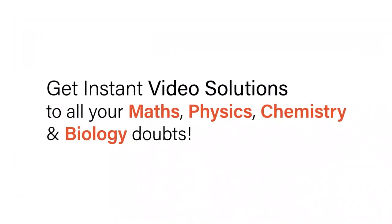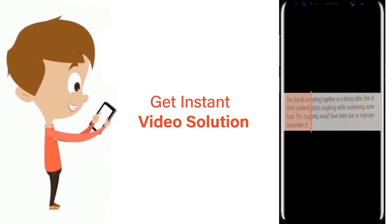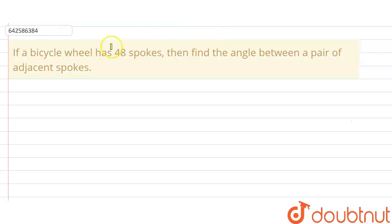With Doubtnut, get instant video solutions to all your maths, physics, chemistry, and biology doubts. Just click the image of the question, crop the question, and get instant video solution. Download Doubtnut app today. Hello everyone, the question is: if a bicycle wheel has 48 spokes, then find the angle between a pair of adjacent spokes.